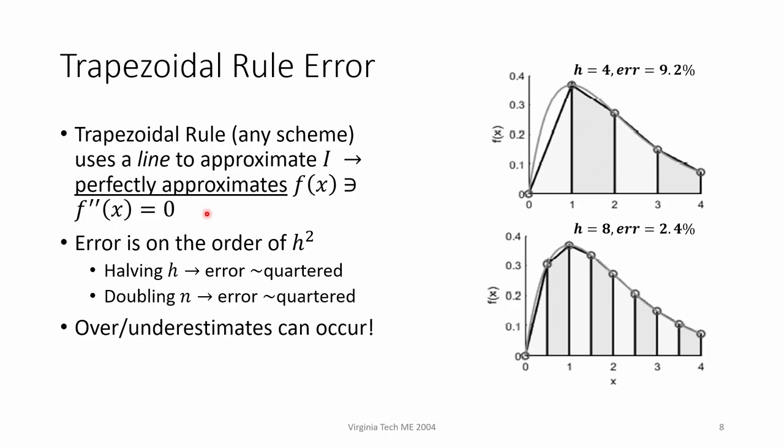Unfortunately, most real-world functions aren't as simple as a straight line. Without going into all the glorious math, the trapezoidal rule is what we call on the order of h squared. This means the error is proportional to the square of the base length. If we cut the segment's base length in half, we will about quarter our error. We could equivalently say doubling the number of trapezoids we use will cut our error in four. In the top figure here, four trapezoids resulted in an error of 9.2%, and right below that, we doubled the number of trapezoids and we just about quartered our error.